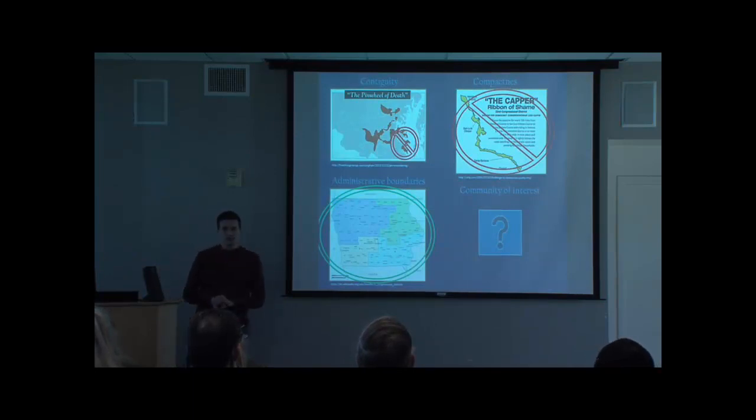The first is contiguity, making sure that a district is one single shape instead of multiple disconnected features. The second is compactness, ensuring that the district is a rounded, sensible shape and not a snake-like shape as Santa Barbara's district used to be.